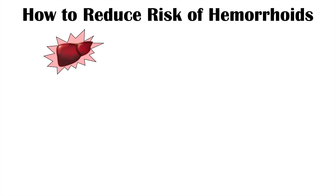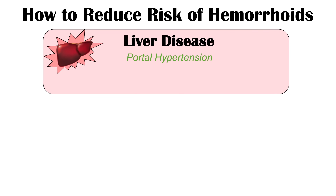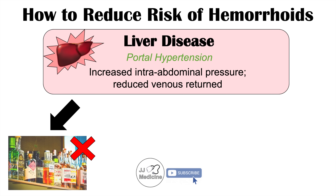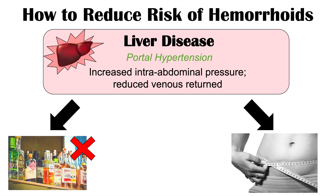Another risk factor is liver disease, specifically because of portal hypertension. In cirrhosis, the liver becomes scarred and blood flow through it slows down, causing increased pressures within the portal system and the abdominal venous system in general. This increased intra-abdominal pressure and reduced venous return can lead to or worsen hemorrhoidal disease. It's important to reduce the risk of liver disease by avoiding alcohol and, for non-alcoholic fatty liver disease, by trying to lose weight.